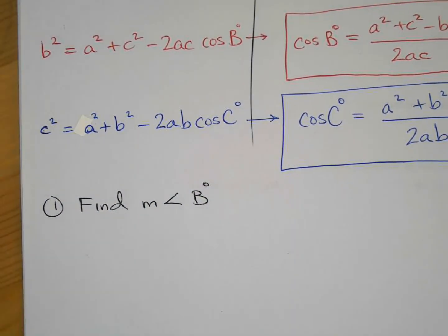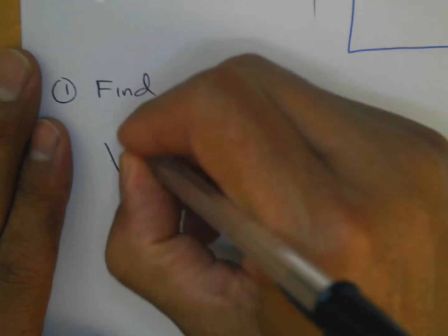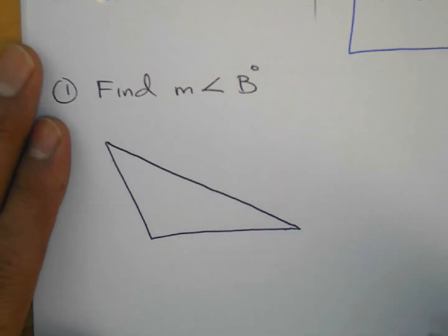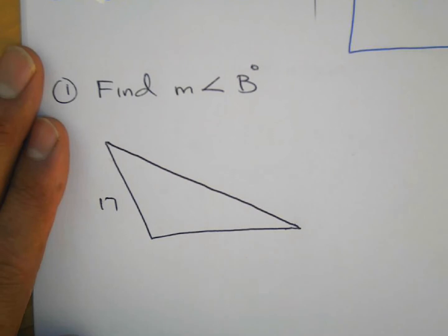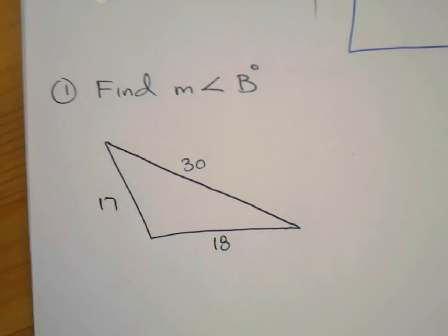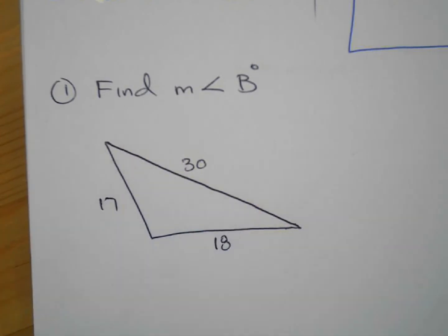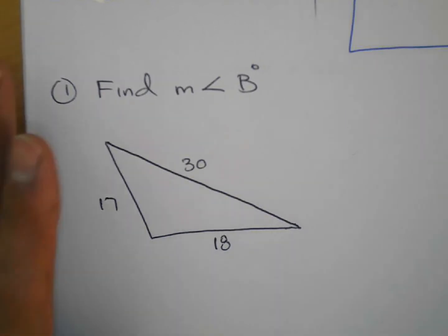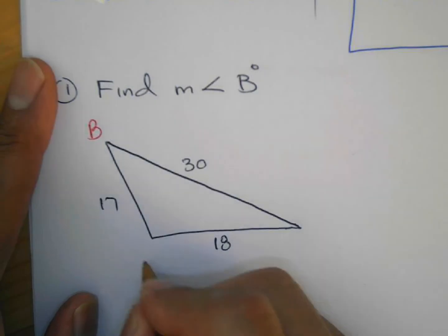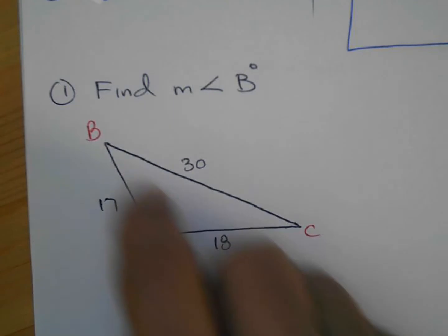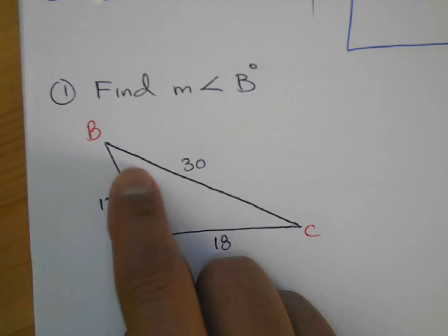Find the measure of angle B. If the triangle isn't labeled ABC, label it that way and stick to these formulas. The triangle has sides 17, 18, and 30 — all side measures, no angle measures. Remember, Law of Cosines is used when you have one angle or no angles. Here we have no angles. We're finding angle B, where side b = 18, side a = 30, and side c = 17.